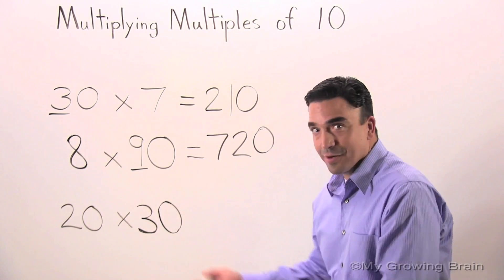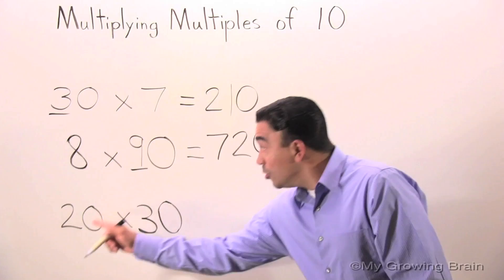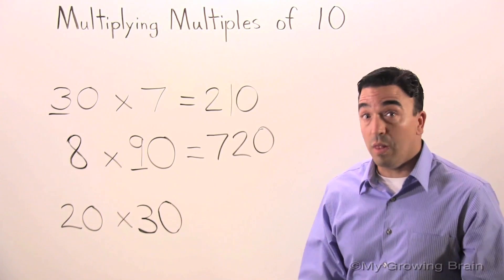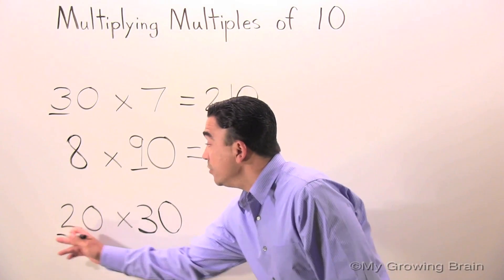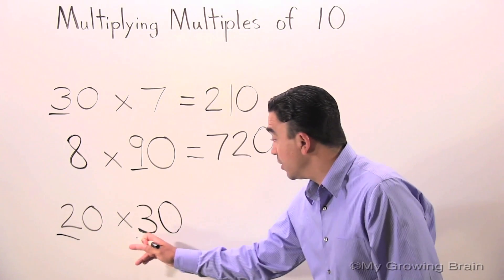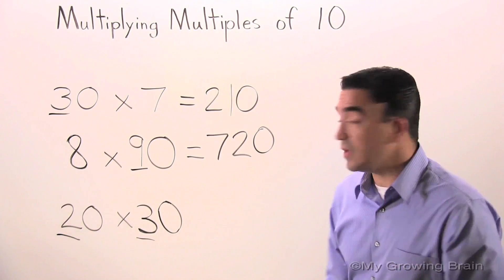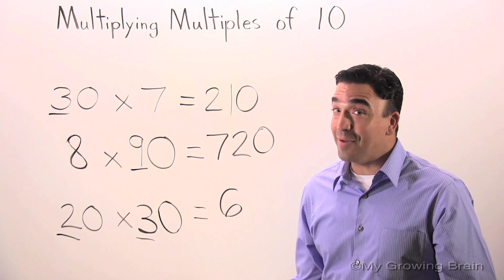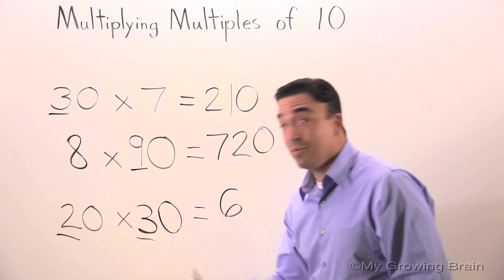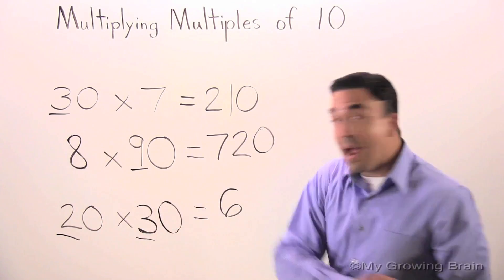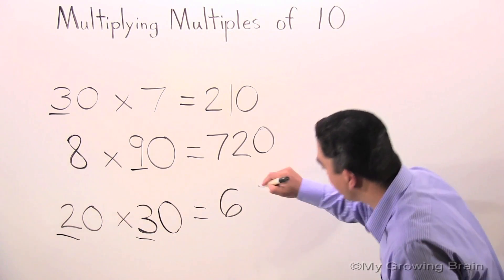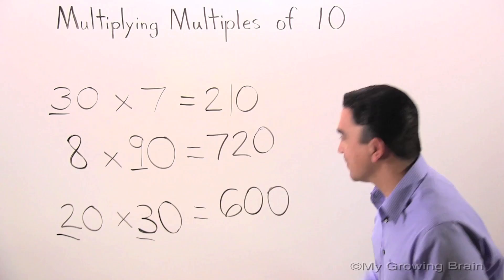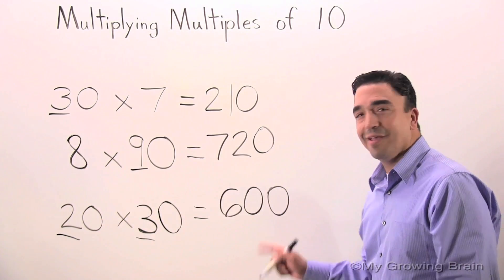Last problem, a little tricky, two zeros. 20 times 30. Well, I'm going to multiply 2 times 3, which is equal to 6. How many zeros? 1, 2. 20 times 30 equals 600.